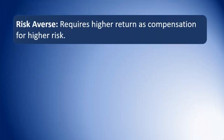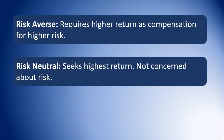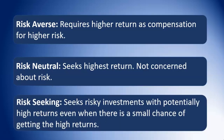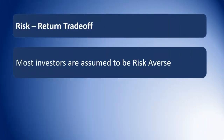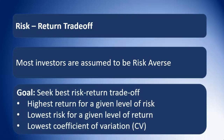We can group investors into three categories. Risk averse investors require a higher return as compensation for taking higher risk. Risk neutral persons seek the highest return and are not very concerned about risk. Risk seeking persons seek out risky investments because of their potentially high returns, even if there's only a small chance of achieving them. Most investors are assumed to be risk averse, and their goal is to seek the best risk-return trade-off: the highest return for a given level of risk, the lowest risk for a given level of return, or simply the lowest coefficient of variation.